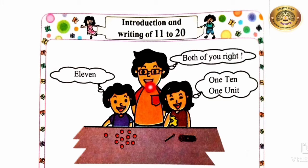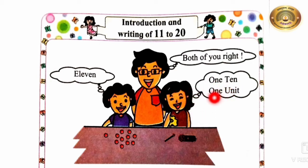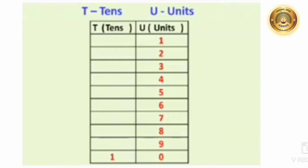Look at the picture. The father has asked them to count the objects. The boy counted the bits as 11, and the girl counted the sticks as 1 ten and 1 unit. Both the answers are correct. We can read the number in both ways. So children, first of all, let's revise the numbers from 1 to 10.